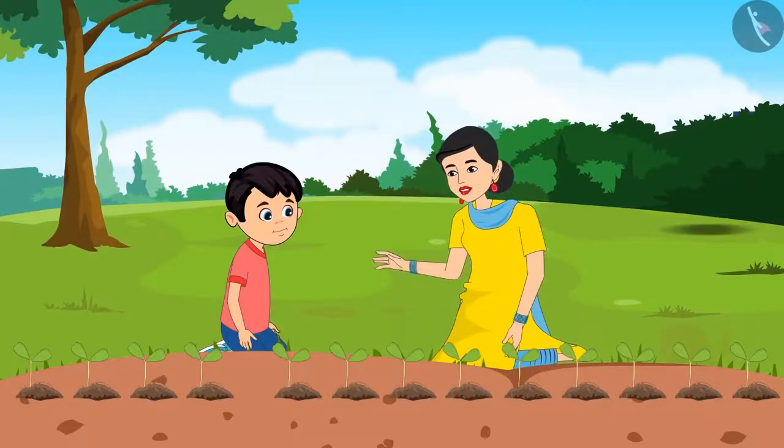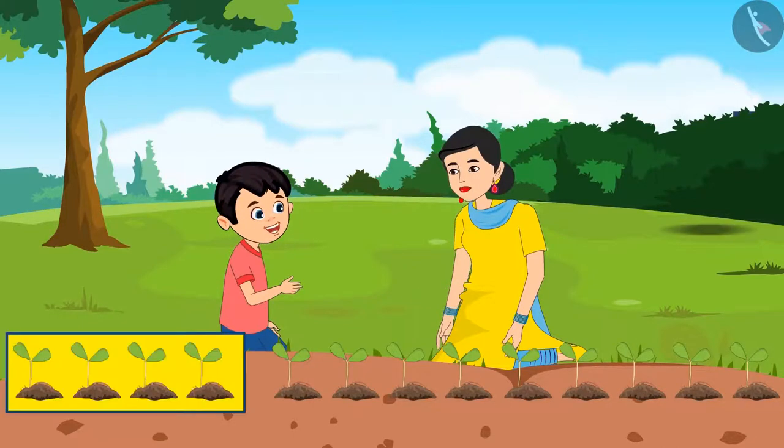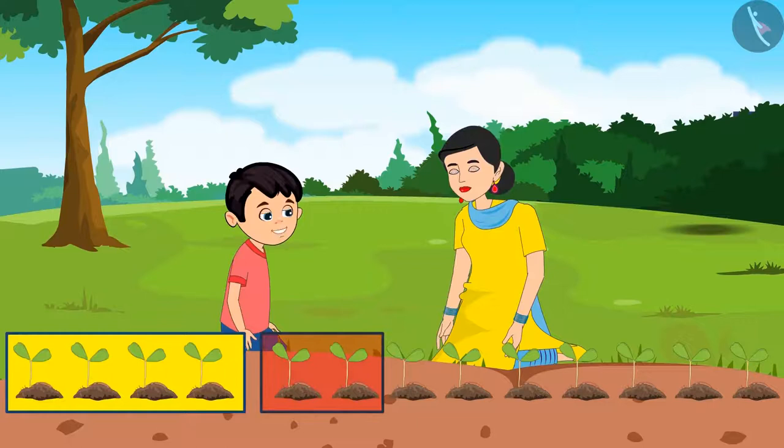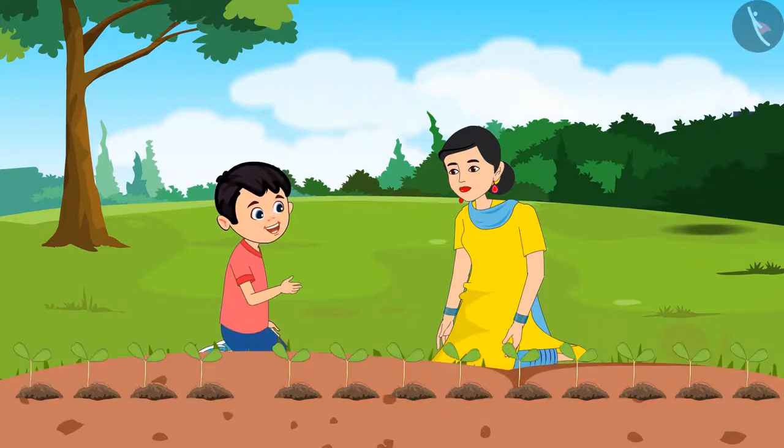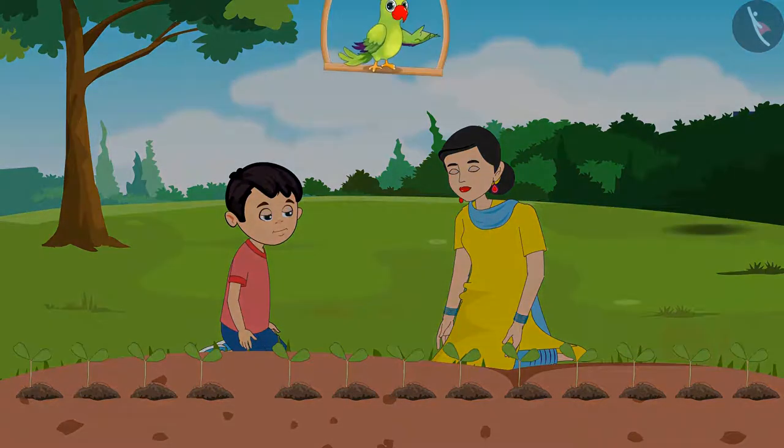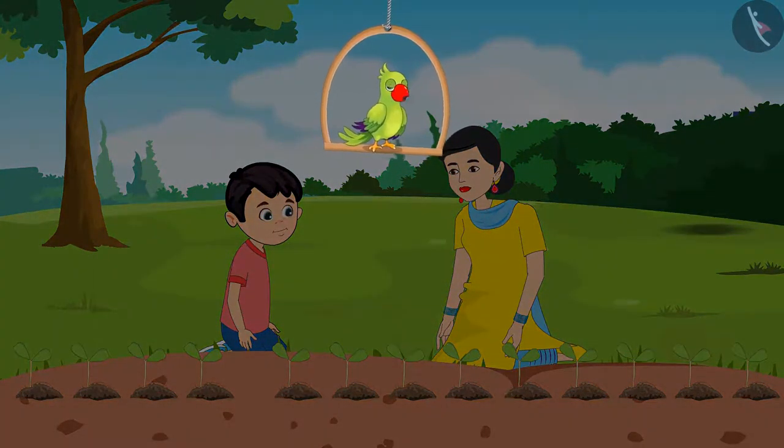We have planted four—four, five, six, seven, eight, nine, ten, eleven, twelve. Mom, we have planted twelve saplings in total. Children, has Chotu counted correctly? Let us see.